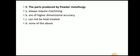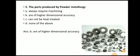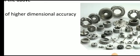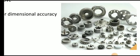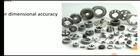Next question: The parts produced by powder metallurgy are of higher dimensional accuracy. This is the biggest advantage of powder metallurgy — whatever parts we produce have higher dimensional accuracy, and generally no machining is required. Here you can see different parts produced by powder metallurgy; no machining is required after the process.